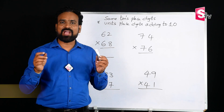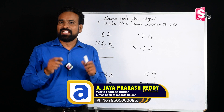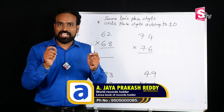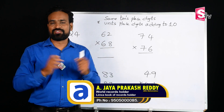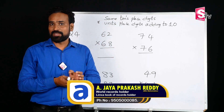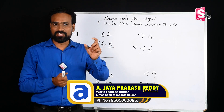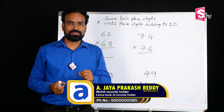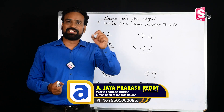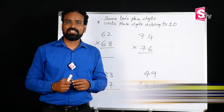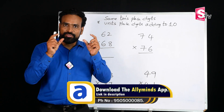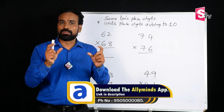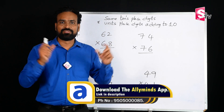Hi everyone, welcome to AllieMinds. Today, we will learn a special type of multiplication. What is the special type of multiplication? Two double-digit numbers with the same tens-place digits, where the sum of the unit-place digits is 10. We will find the answer in 2-3 seconds.